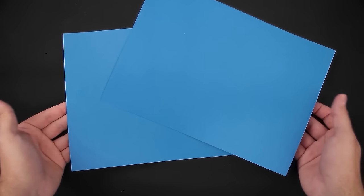To make this paper gun, you'll need two sheets of paper. Let's start by folding the first one in half.